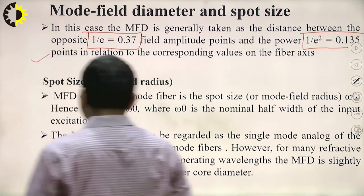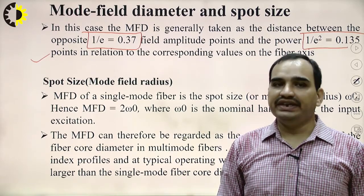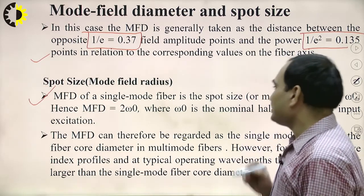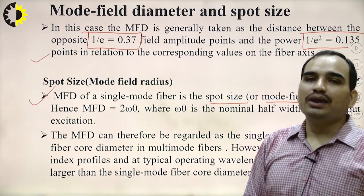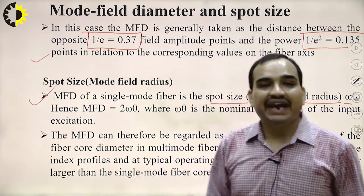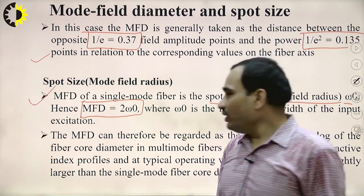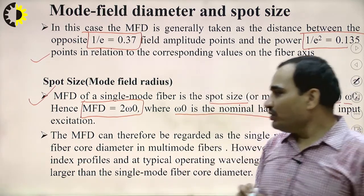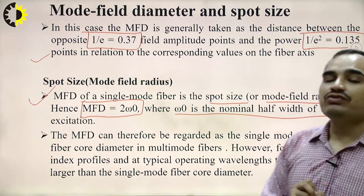The spot size is nothing but the mode field radius. The mode field diameter of a single mode fiber is specified by the spot size, also known as the mode field radius, represented by omega 0. The mode field diameter equals twice omega 0, where omega 0 is the nominal half width of the input excitation. The mode field diameter can therefore be regarded as the single mode analog of the fiber core diameter.